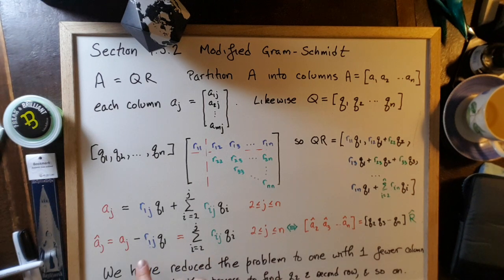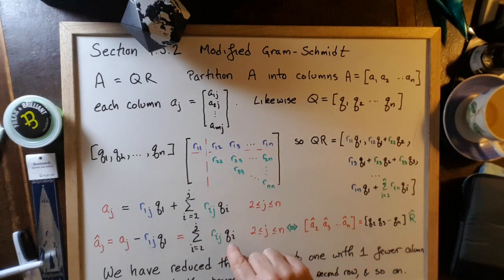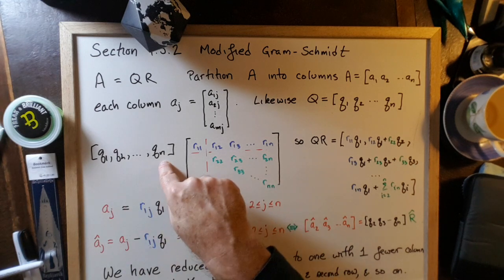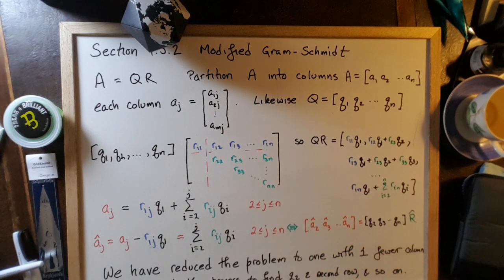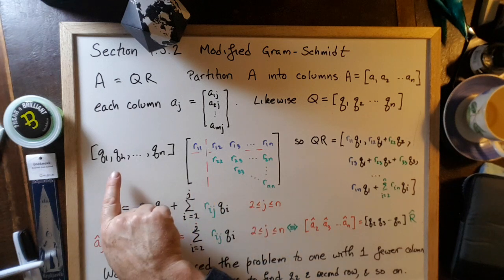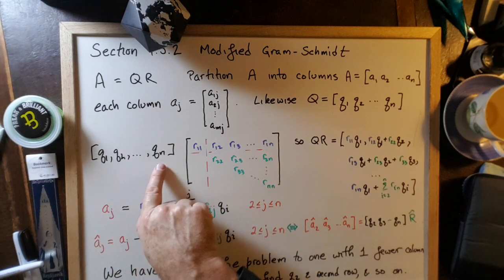And that gives us what's left over is the sum from I equals 2 up to J of these green RIJs times the QI. So these are the so far unknown Qs and the so far unknown upper triangular entries. And this is true for J equals 2, 3, all the way up to N.